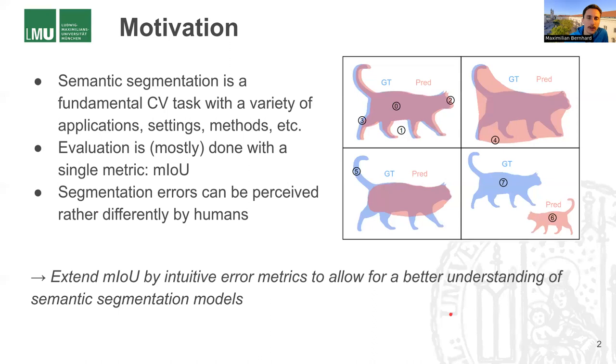However, evaluation and benchmarking is mostly done with a single metric, which is the mean intersection over union. So it's questionable whether a single metric is actually suitable to capture this whole diversity and variety of the task.